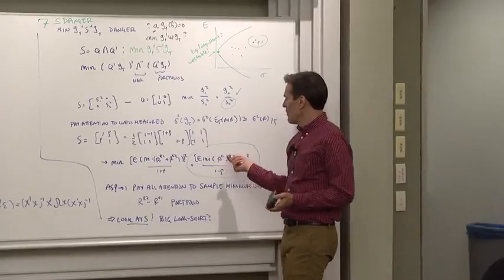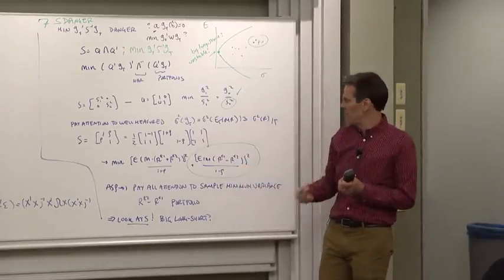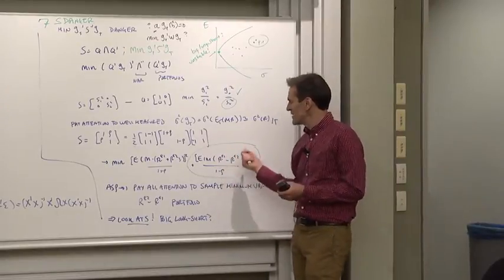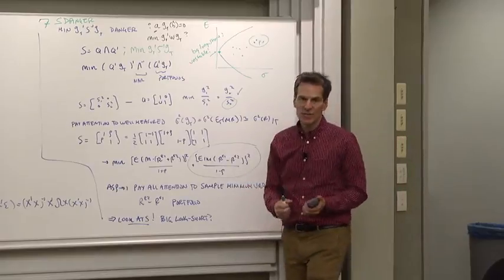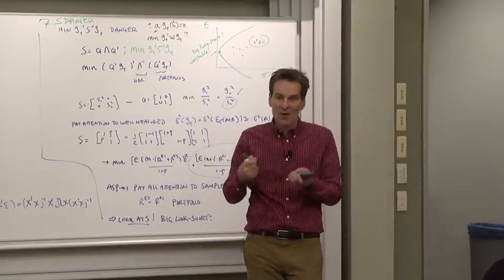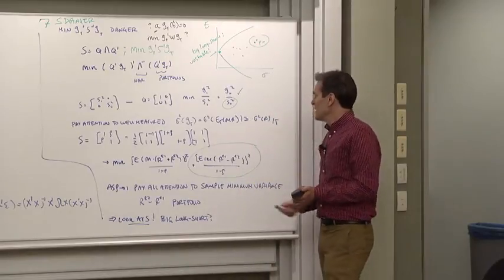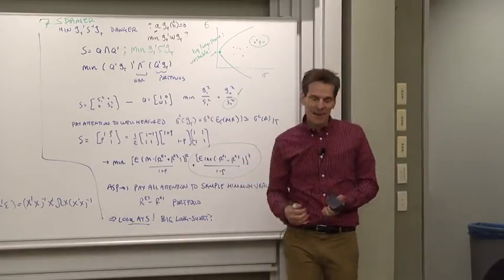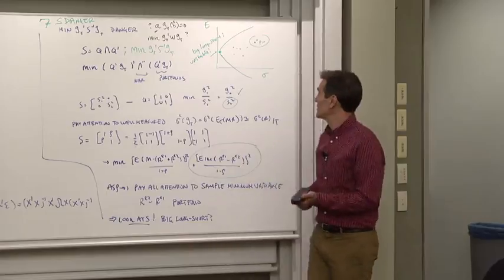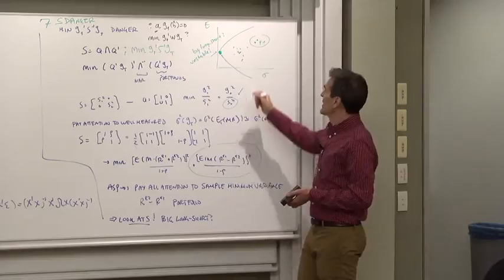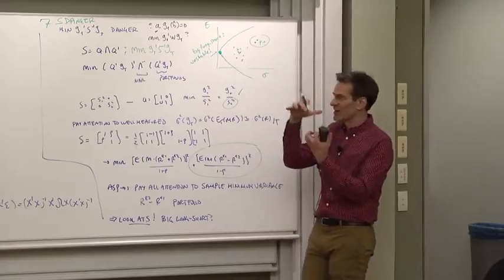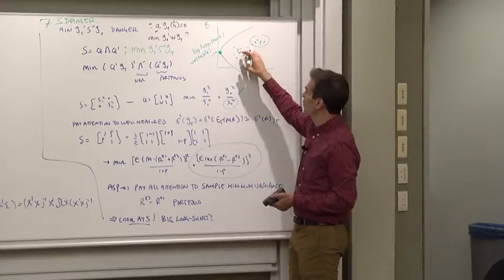Now maybe you want to pay attention to differences between assets and maybe you don't. Most of the time, since our means don't move as much as the returns, we're basically trying to find sample minimum variance returns because returns with small variance are very well measured. But minimum variance returns in sample are notoriously poorly measured. Think of a mean variance frontier: the minimum variance return is that one over there.